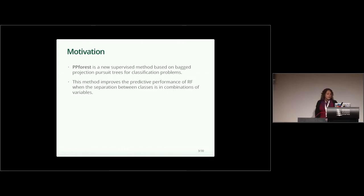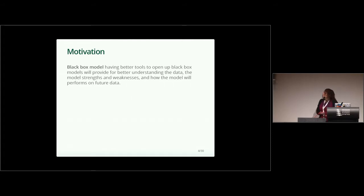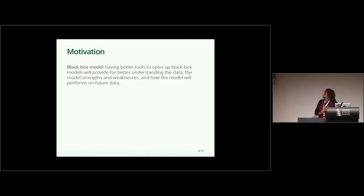PP forest is a new supervised method based on projection pursuit trees for classification problems. This method improves the predictive performance of a random forest when we have classes that can be separated by linear combination of variables. But sometimes these kinds of models are called black box models, because we don't know what is going on inside. We need tools to discover and open these black box models, which will provide us a better understanding of our data, the strengths of our model, and the weaknesses.